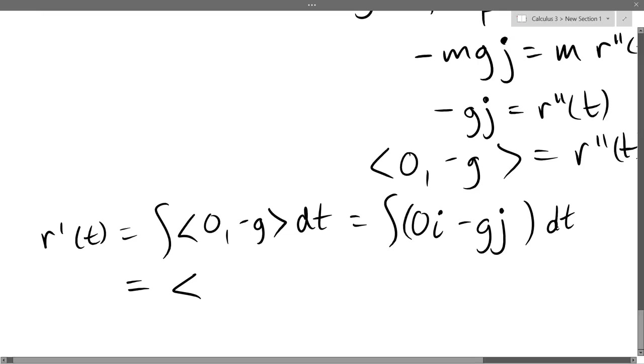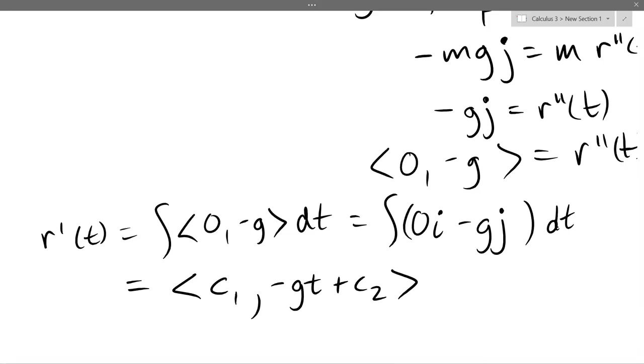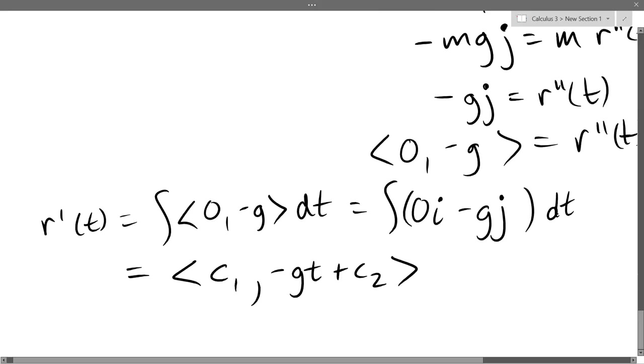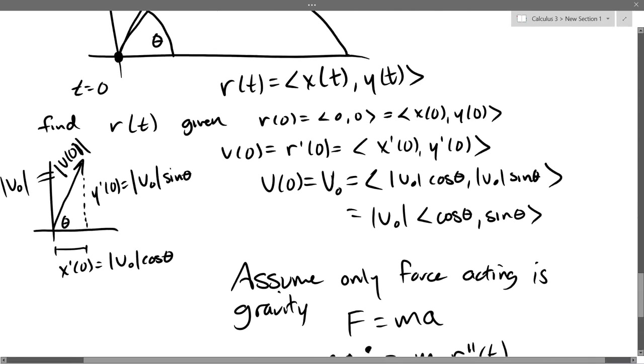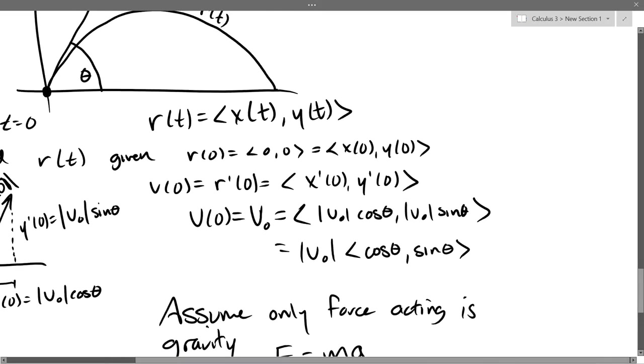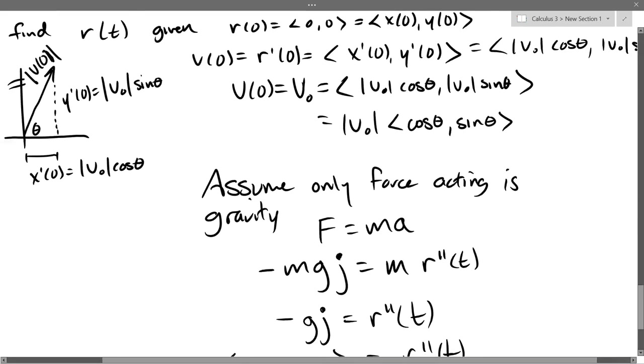Antiderivative of 0 is a constant, so I'll call it c1 comma negative gt plus c2. So any questions on that antiderivative? And we got our constant there. Well, our two constants. Hopefully I wrote down r prime of 0 somewhere. There we did. So r prime of 0 is what's right below it, magnitude, initial velocity, cos theta, magnitude, initial velocity, sin theta.